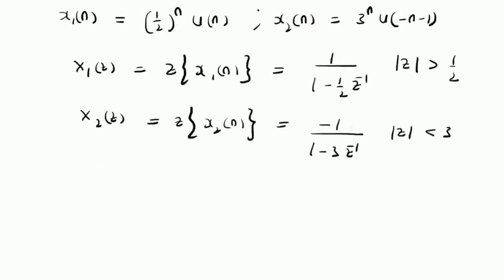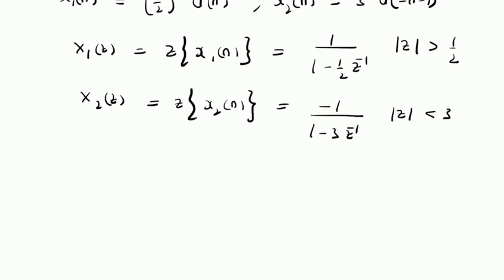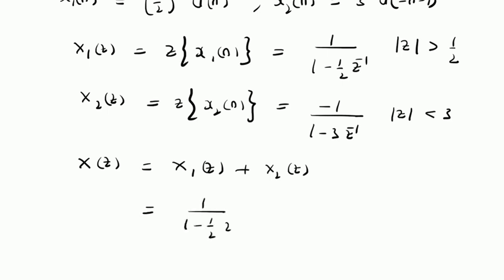Now we can combine them using the linearity property. The Z-transform X of Z of the total signal X of n is the combination of X1 of Z and X2 of Z. Adding them together, we get X of Z equals 1 over (1 minus 1/2 Z inverse) minus 1 over (1 minus 3 Z inverse). That is the overall Z-transform.